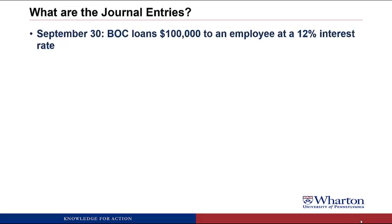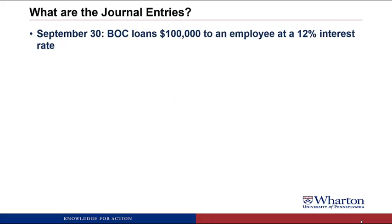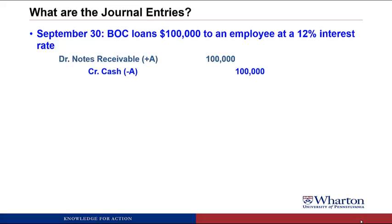On September 30th, BOC loans $100,000 to an employee at a 12% interest rate. This is a cash transaction happening during the fiscal period. BOC is loaning $100,000 cash, so cash is going down — we credit cash for $100,000. The debit is going to be an asset called Notes Receivable, because the employee owes us $100,000 in the future. We don't call it accounts receivable because we only use that for customers.